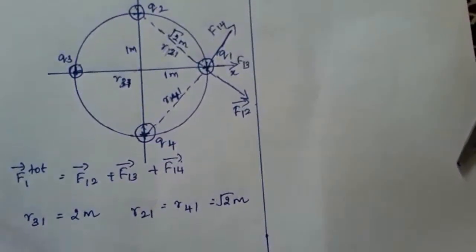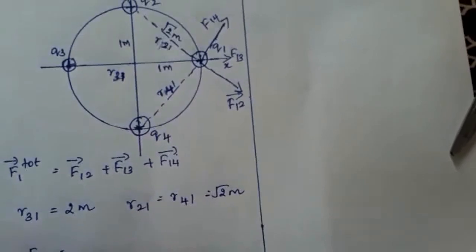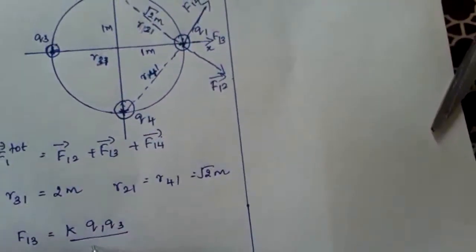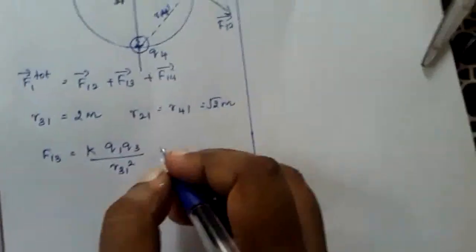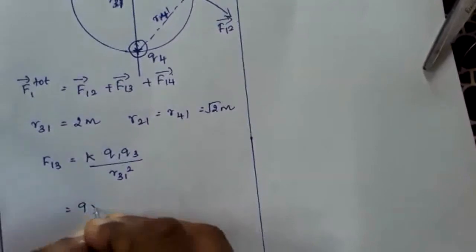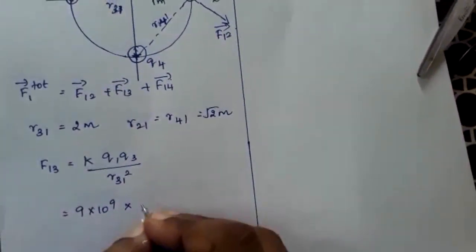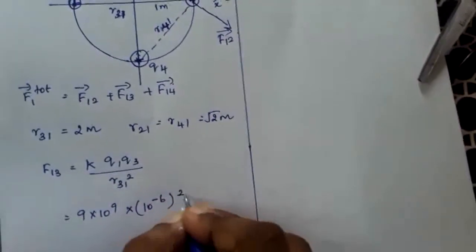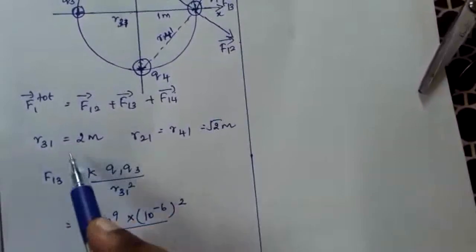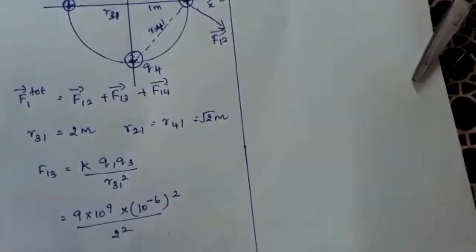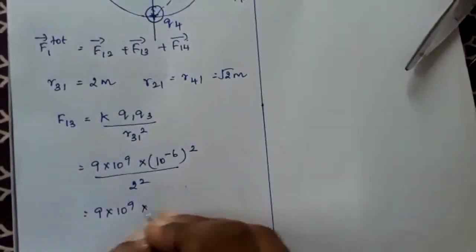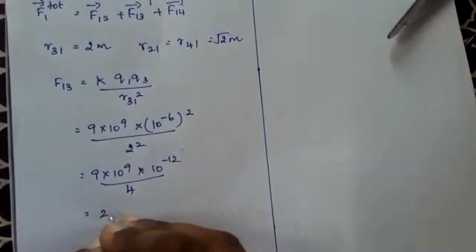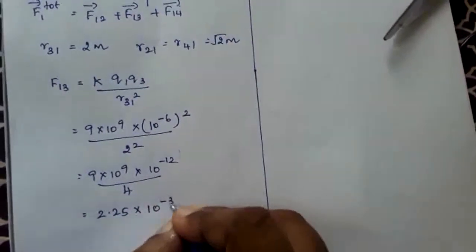Now we can find F13. F13 equals K times Q1 times Q3 divided by R31 squared. The K value is 9×10⁹, Q1 and Q3 are both plus 1 microcoulomb (10⁻⁶), and R31 is 2 meters. So F13 equals 9×10⁹ × (10⁻⁶)² / 4, which gives 9×10⁻³ / 4, equal to 2.25×10⁻³ newton.